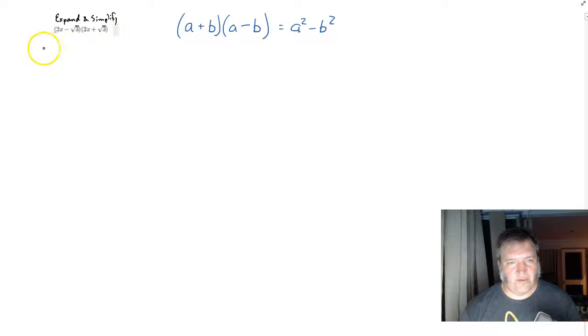(2x - √3)(2x + √3), it's just going to be (2x)² - (√3)². You don't even need to write in that line of work if you don't want to.